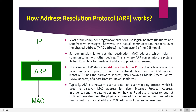ARP stands for Address Resolution Protocol, which is one of the most important protocols of the network layer in the OSI model. What ARP does is find the hardware address, also known as the Media Access Control or MAC address, from a host. It will know the IP address but not the MAC address, and for finding the MAC address, ARP is used. ARP is basically a network layer to data link layer mapping process used to discover the MAC address for a given IP address.